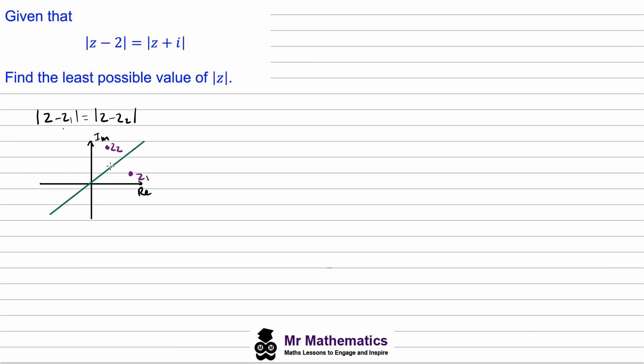What we need to do for this example is sketch this Argand diagram. If we begin by identifying z1, well z1 must be equal to positive 2.